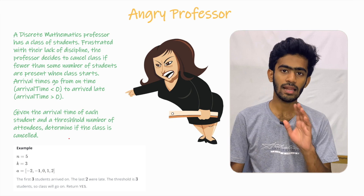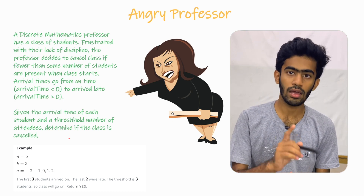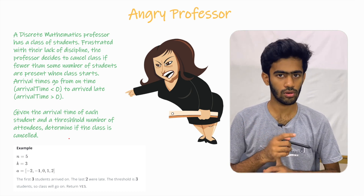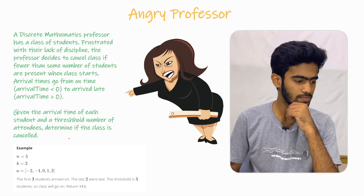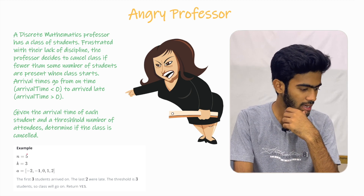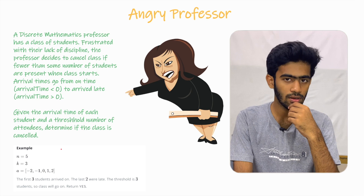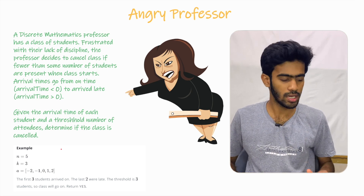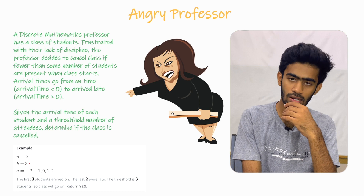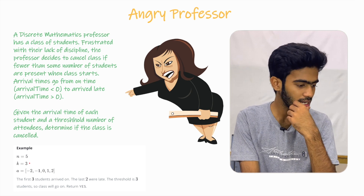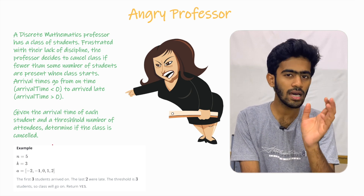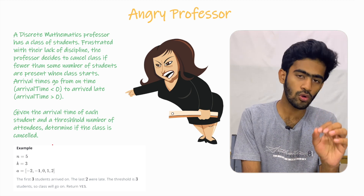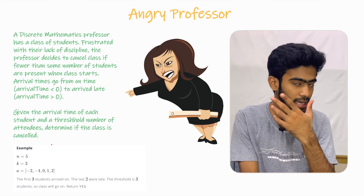So if class is cancelled you get YES, if class is not cancelled you get NO. For example: n equals five, k equals three. N equals five is the total number of students, k equals three is the threshold. How many students must be present at minimum? If we don't have three students on time, we will cancel the class.